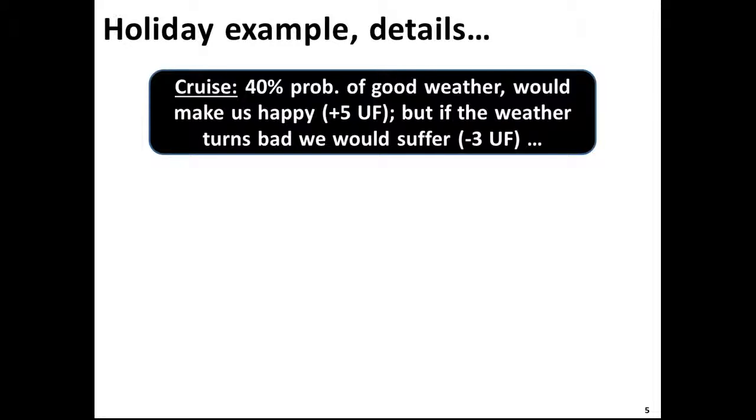Let's give some numbers. In the case of the Alaskan cruise let's say there's a 40% probability of good weather which would make us very happy. And rather than money let's call it units of happiness. So we have 5 units of happiness. These are arbitrary numbers. But this is a good start. Let's say if the weather turns bad we would be very unhappy and we would suffer. So let's call it minus 3 units of fun.